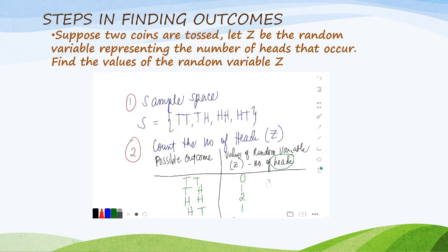So, what are now our random variable values? The number of values is zero, one, and two. We do not repeat one because it is already illustrated. So, that is the random variable Z.